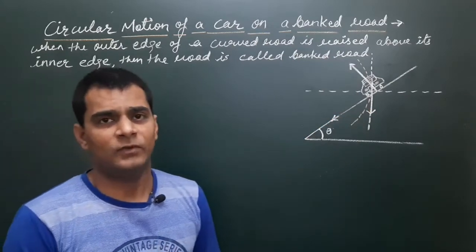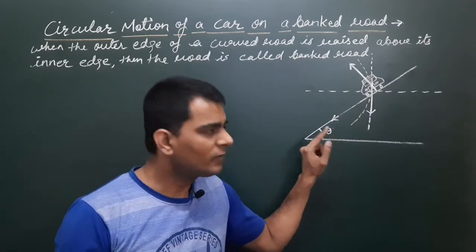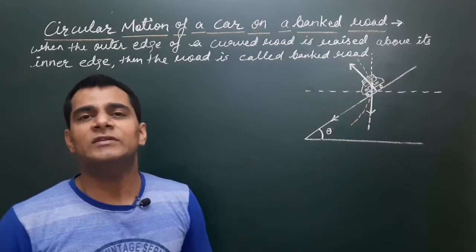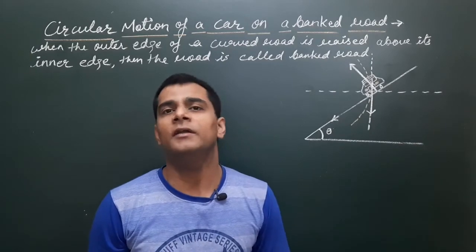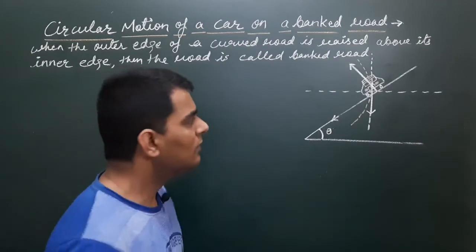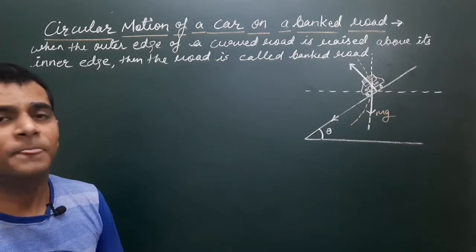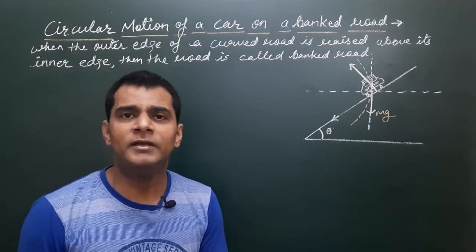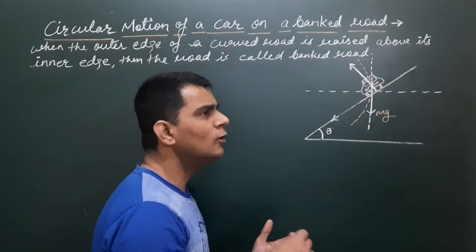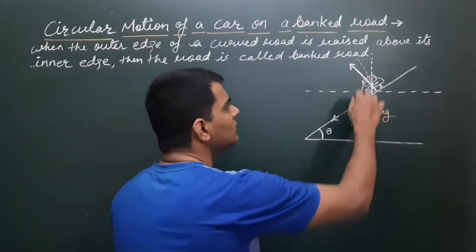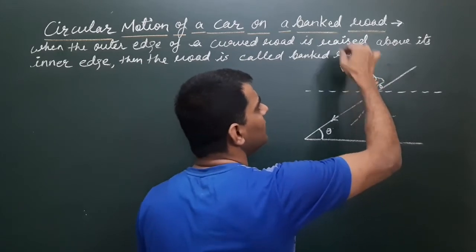So there will be 3 forces acting on the car. This is the angle of banking. The first one is the weight of the car — weight is always vertically downward towards the center of the earth, so Mg acts vertically downward. Second is the normal reaction — normal reaction is perpendicular to the surfaces in contact. This is a component of contact force, and the normal reaction N acts in this direction.